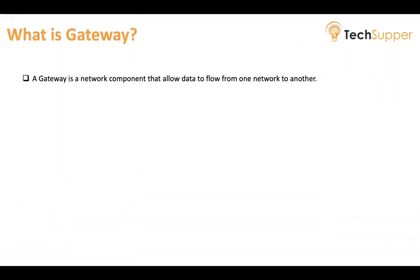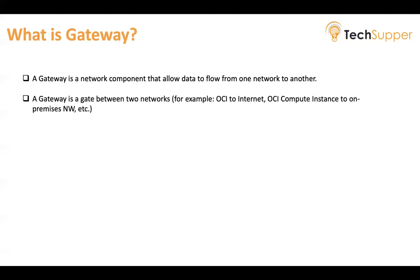So what is a gateway? As the name suggests, it is a gate for your traffic. A gateway is a network component that allows data to flow from one network to another. It's like a gate — if you want to establish communication between two different networks, you have a gateway that will allow the traffic. Without a gateway, traffic cannot flow from one network to another.